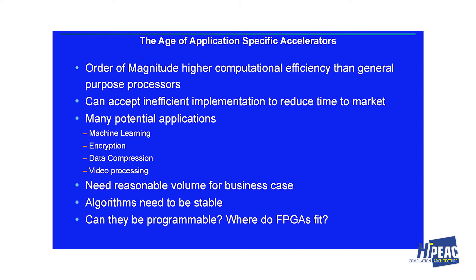The AI market is evolving so quickly that requirements are changing at a rapid pace. What's important is getting your product done as quickly as possible, because if you're on a typical three-year cycle it's very difficult to predict exactly what's important three years out. To get your product out sooner, you have to accept a slightly inefficient implementation — leave a little power on the table, leave a little performance on the table. There are many potential applications: machine learning, encryption, data compression, video processing — but the challenge is there needs to be reasonable volume to make the business case.